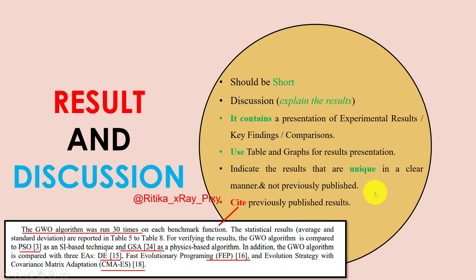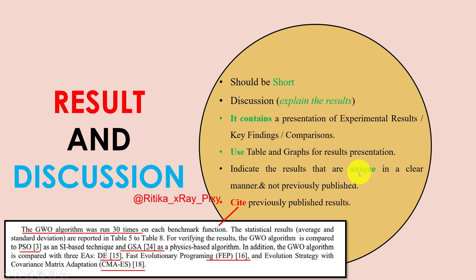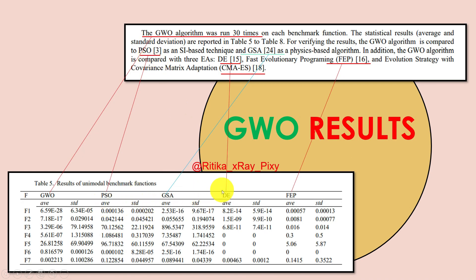The results and discussion section should be short. Here we discuss the results and how we achieved them. In the discussion section, we explain the results. It contains a presentation of experimental results, key findings, and comparison. It indicates results that are unique and not previously published. We can cite previously published results for comparison purposes.